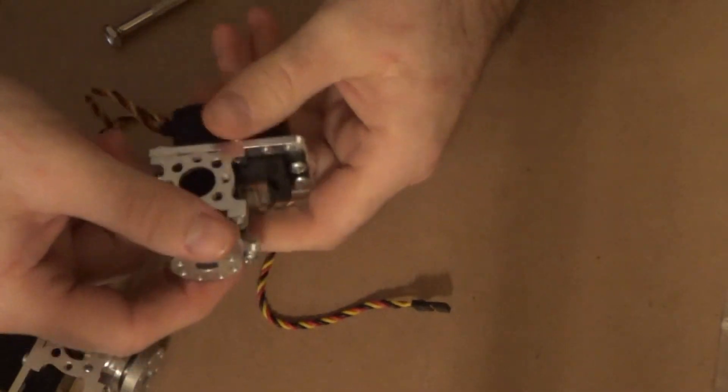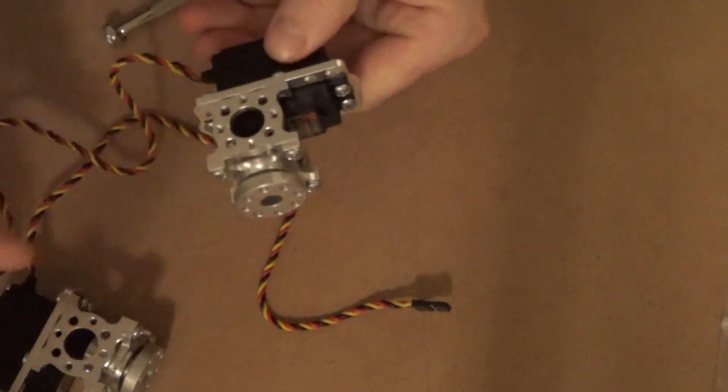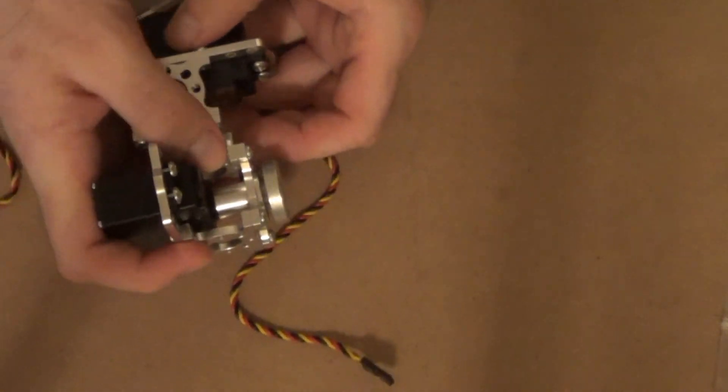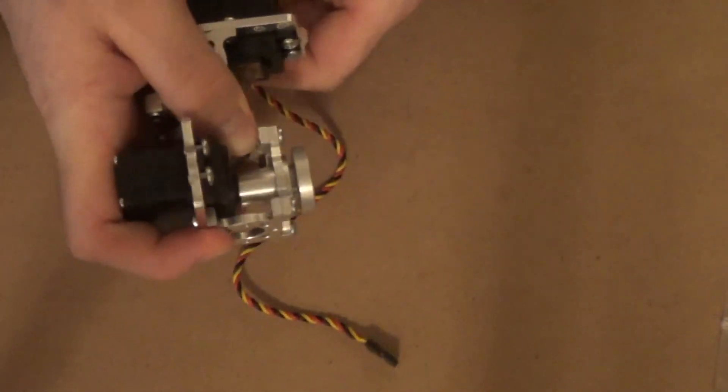So as I was saying, this would be my roll adjustment. And then this would be connected here. And then I could use this as my pitch adjustment. Like so. So I'd have roll and pitch.